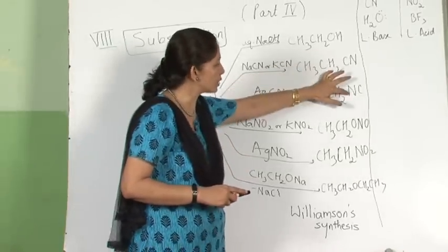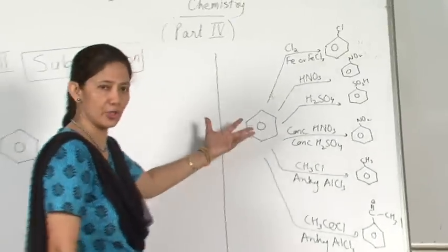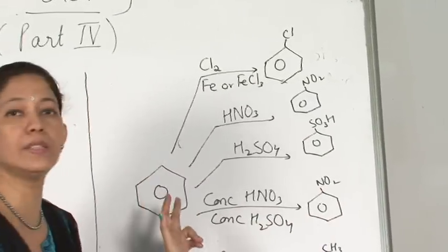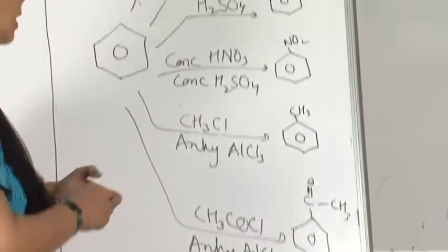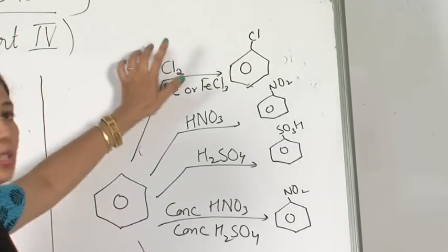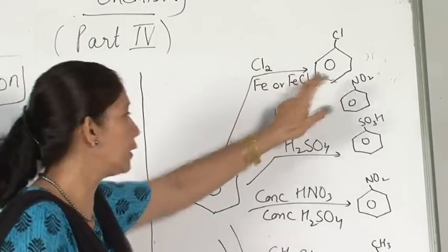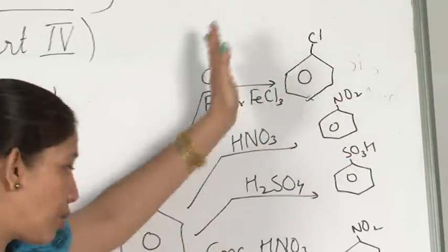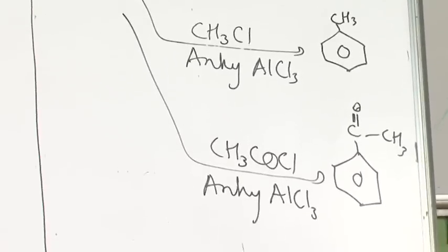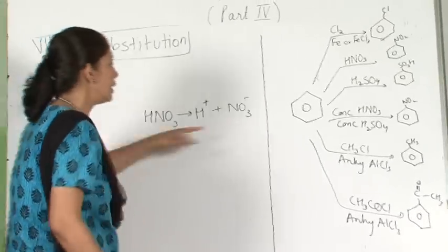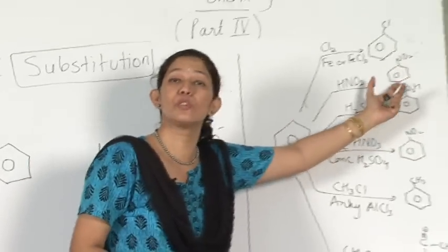From all these compounds, note the ambident functional groups: cyanide, isocyanide, nitrite, and nitro group. Now, in continuation with substitution reactions — benzene undergoes electrophilic substitution. Benzene with Cl2/FeCl3 gives chlorobenzene (halogenation); with Br2/FeBr3 gives bromobenzene. With nitric acid, NO2 is introduced. These are all electrophilic substitution reactions. Nitric acid in organic reactions dissociates to give OH⁻ and NO2⁺ (nitronium ion), not H⁺ and NO3⁻.